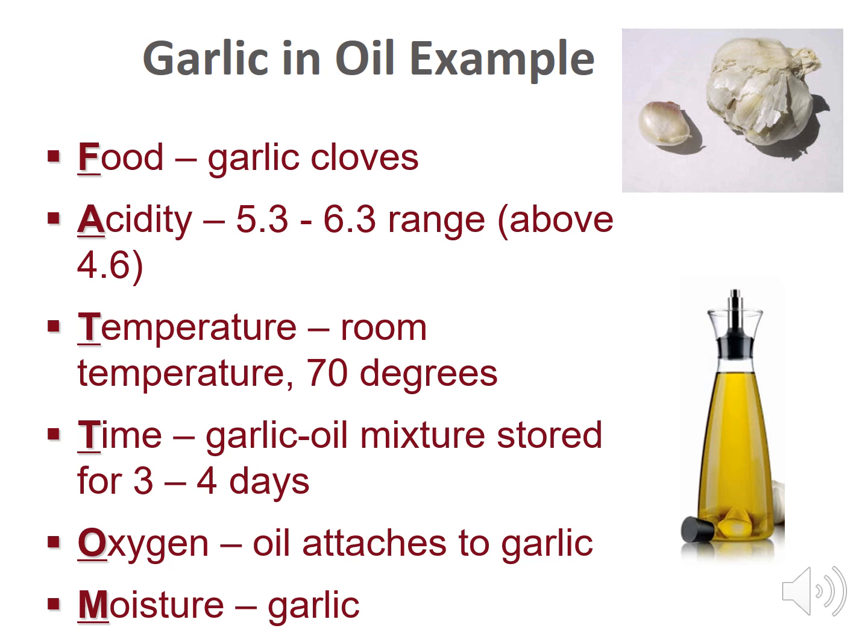Here's an example of how FAT TOM can produce Clostridium botulinum toxin in a garlic-flavored oil mixture. The food is the carbohydrate from the garlic cloves, which gives the Clostridium botulinum energy to survive. For acidity, the pH range of garlic is 5.3 to 6.3, which is above 4.6 — the perfect acidity for growth of Clostridium botulinum.